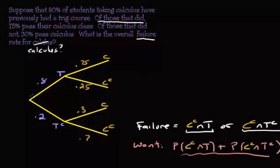Alright, well, just for the heck of it, let's multiply through all the branches. So this would be the probability of taking trig and passing calc. So that's 0.8, oops, 0.8 times 0.75, so that's 0.6.